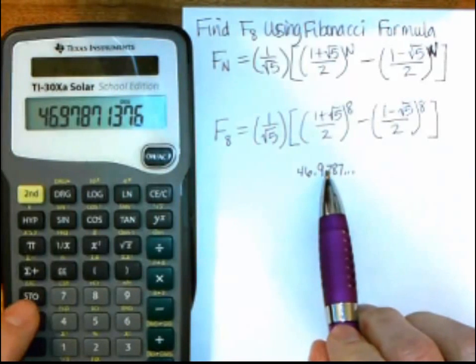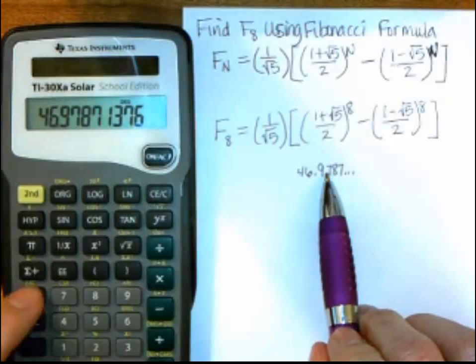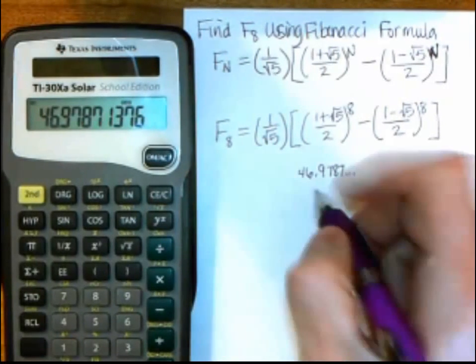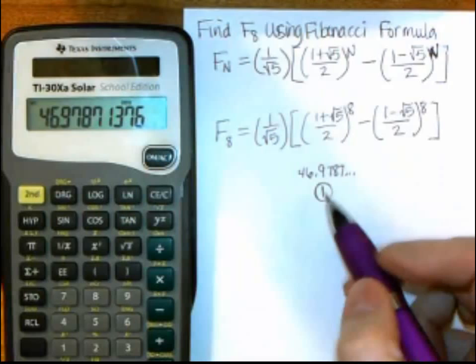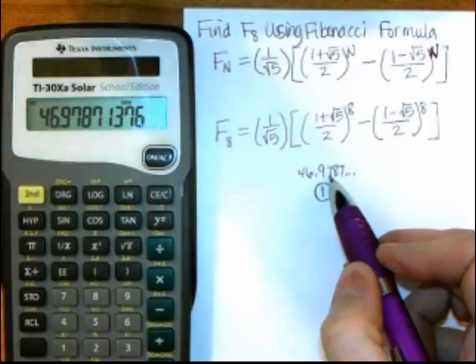So I'll use store, and then you just pick a digit. So I'll do store 1, and that stored it in position 1, so I want to, or bin 1, so I want to make sure I write that down so I don't forget where I stored this number.